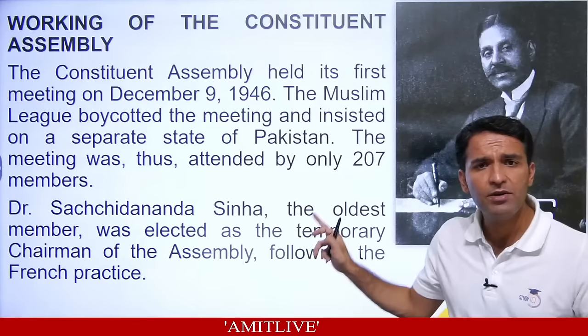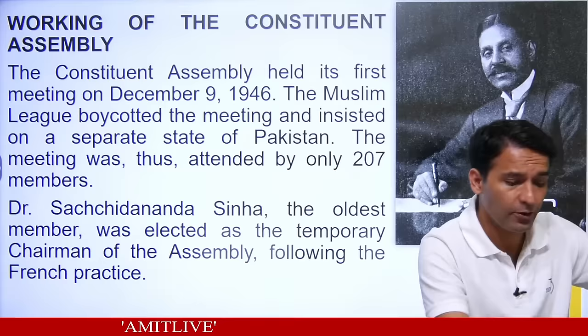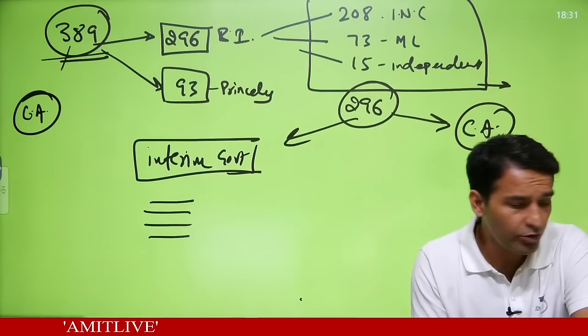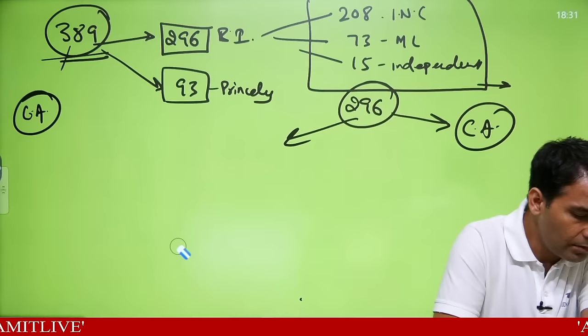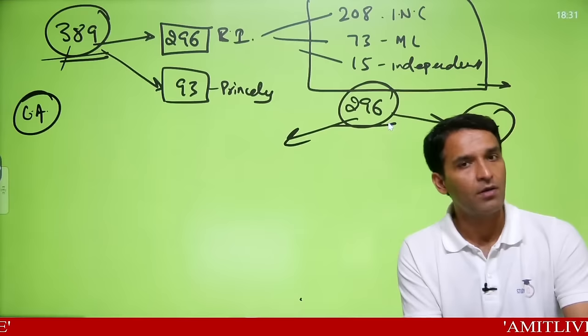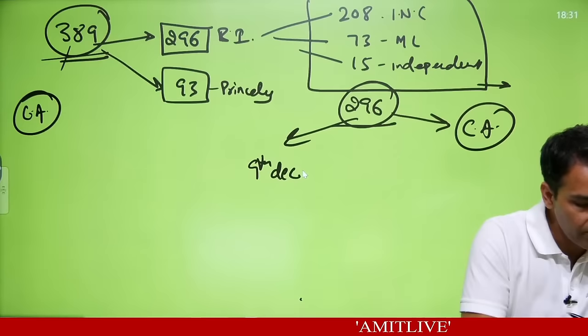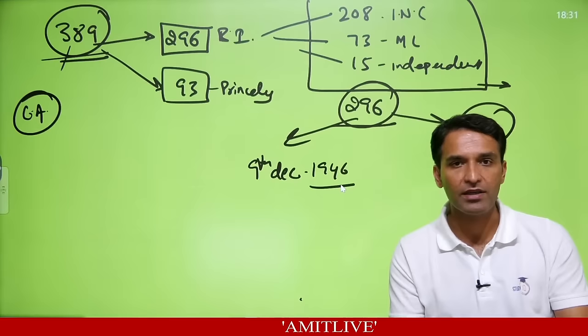So once this was made as a Constituent Assembly, these 296 people were supposed to meet and start making the constitution. The date was chosen and they were supposed to meet for the first time on 9th December 1946. But the Muslim League boycotted, so only 211 people were present — 207 Congress and 4 independents.